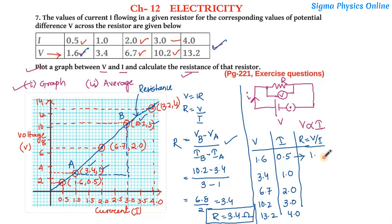For the first case, the value of resistance becomes 1.6 by 0.5, that is 3.2. Then 3.4 by 1.0 is 3.4. Next, 6.7 by 2.0 is 3.35. The next value is 10.2 by 3.0 which is 3.4.